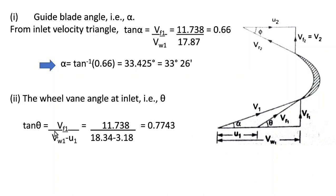Therefore tan θ = 0.7743, and therefore θ = tan⁻¹(0.7743), which is 37.74 degrees or 37 degrees 44 minutes.